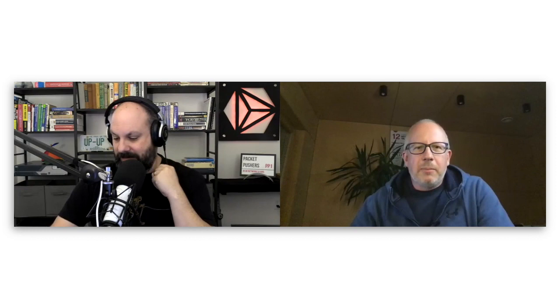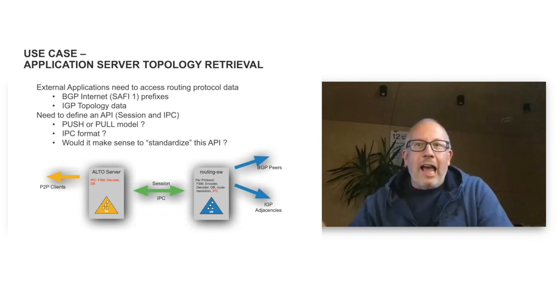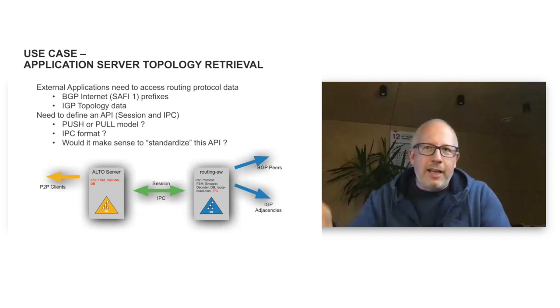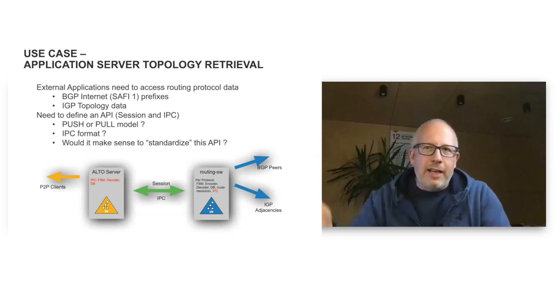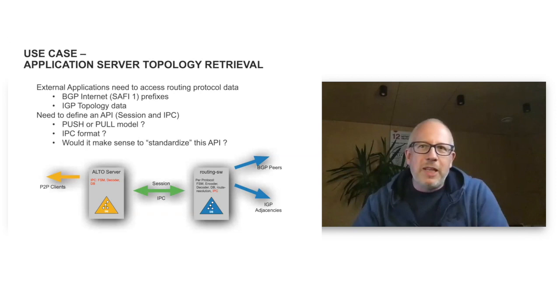As soon as we started talking about it, all the traffic engineering folks jumped on board. They said: real-time topology information across IGP boundaries — I want that. Heavy Level 3 had very significant traffic engineering problems and wanted full visibility into every corner of the network. BGP-LS, or any sort of topology synchronization protocol, could do exactly that.